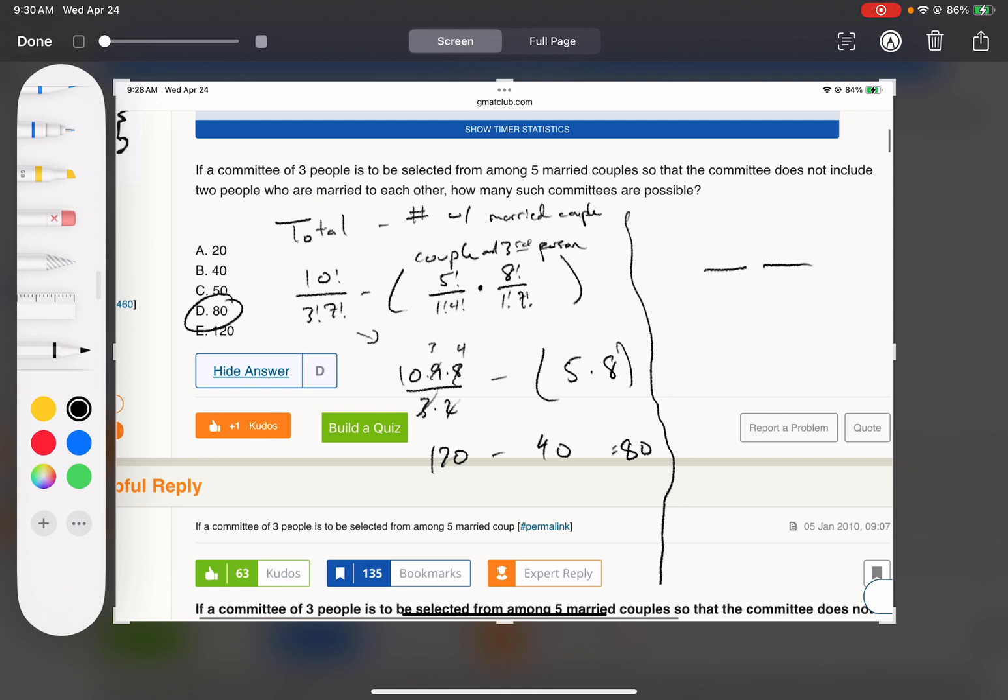But let's just pretend it's a permutation for a second, and do this straight up where we don't pick a married couple.